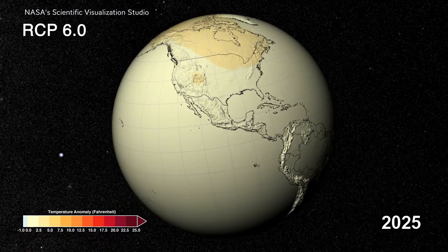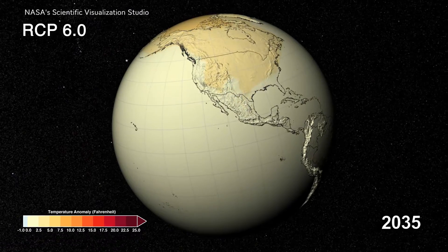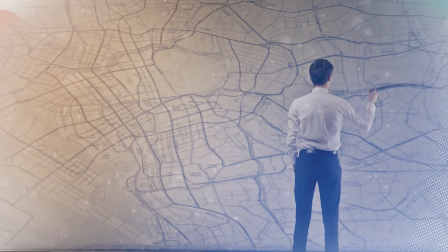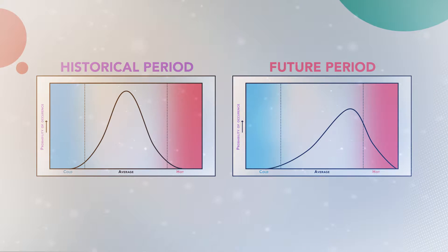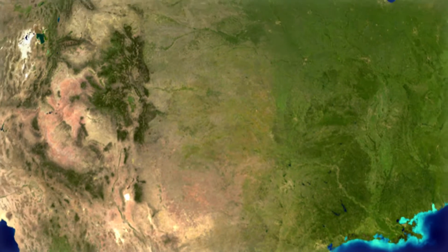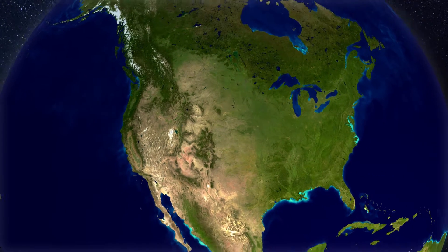Future climate projections from global climate models, or GCMs, are some of the most requested climate products by decision makers who are planning for the impacts of climate change. GCM projections combined with historical output can be used to compare today's climate with what we might experience 50 or 100 years from now as a region, nation, or world. Even with these vast opportunities, there are significant challenges in using these products correctly, so I want to discuss the most common mistake users can make and then show some important results from global climate projections.